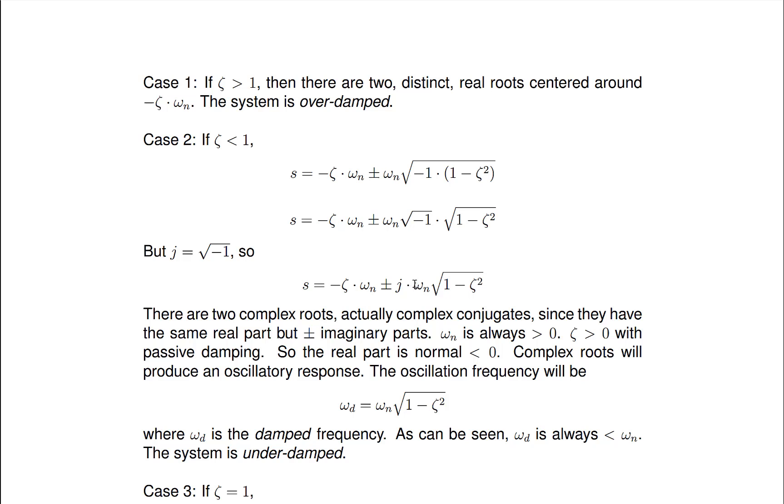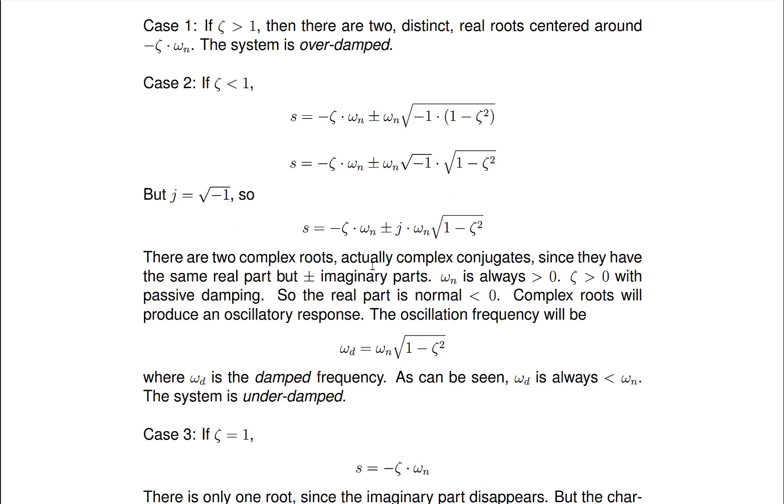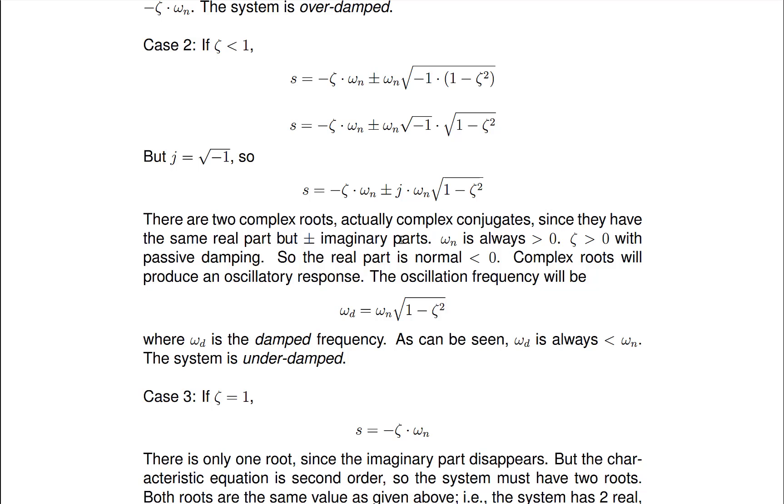So we can rewrite the case of zeta less than 1 like so. And what that means is that we have two roots. They both have the same real part. And then we have a positive and a negative imaginary part. So what this means is when two complex numbers have the same real part and the same imaginary part that's plus and minus, those are called complex conjugates.